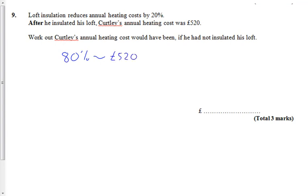So it's gone down by 20%. We can't just add 20% back on. There are a couple of ways we could do it — we could divide by 8 to get 10%, or divide by 4 to get 20% and add that on. But I like to go all the way down with a calculator, because this method works all the time. Divide 520 by 80, which gets you 6.5.